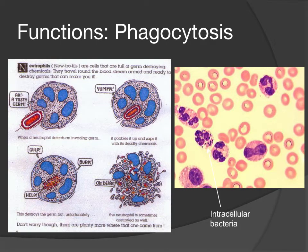On the left is a cartoon of a neutrophil engulfing bacteria, and the granules within the neutrophil will destroy the bacteria. In some cases the neutrophil is damaged and destroyed as well. On the right side, we have an image of three neutrophils, and the one in the middle with the arrow pointing to it has little bacteria inside that have all been phagocytized by the neutrophil.